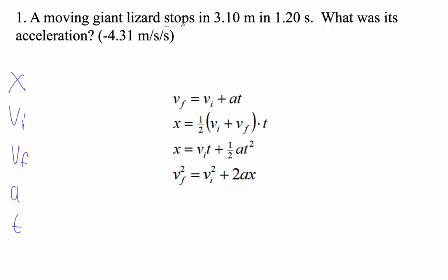So the giant lizard stops, right? That means our final velocity is zero. In 3.1 meters, that's our X. 1.2 seconds is our time. And then we want to know what the acceleration is. So acceleration is, we don't know.